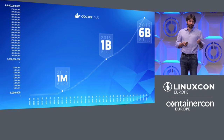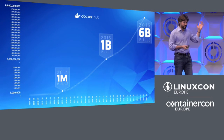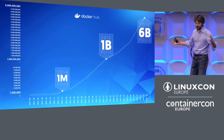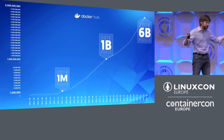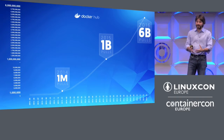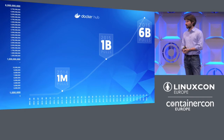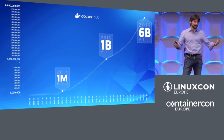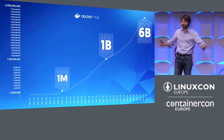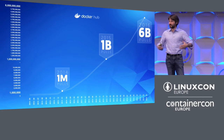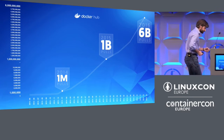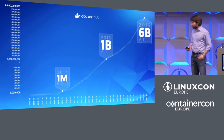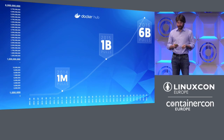We ask ourselves a lot how we reached that level of growth. There are two reasons. First, selfishly, we want to keep it going — we think we're just getting started and there are a lot of people that could use Docker for a lot more things. Second, we want to share what we learned so that more projects can benefit and grow faster. The main reason we think Docker has grown at that pace is because of open source.